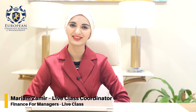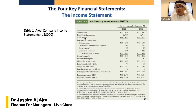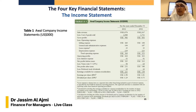We start with sales revenue minus cost of goods sold to get gross profit. Remember, we said there are different definitions of accounting profit. This is one — gross profit — which is the excess of revenues over the cost of goods sold. Then we have operating expenses.